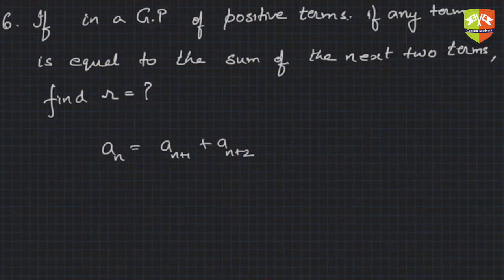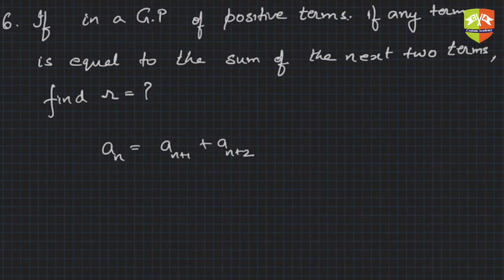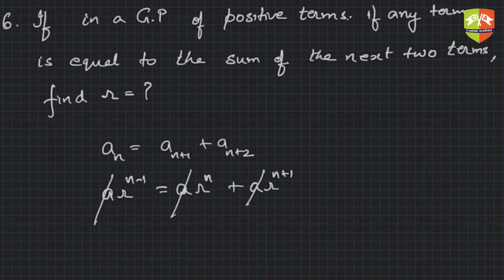So what is a_n? a times R to the power (n minus 1) equals a times R to the power n plus a times R to the power (n plus 1). So a will get canceled all over, positive so a cannot be 0, gone. So you can cancel. R to the power (n minus 1) also, divide the entire equation by R to the power (n minus 1).